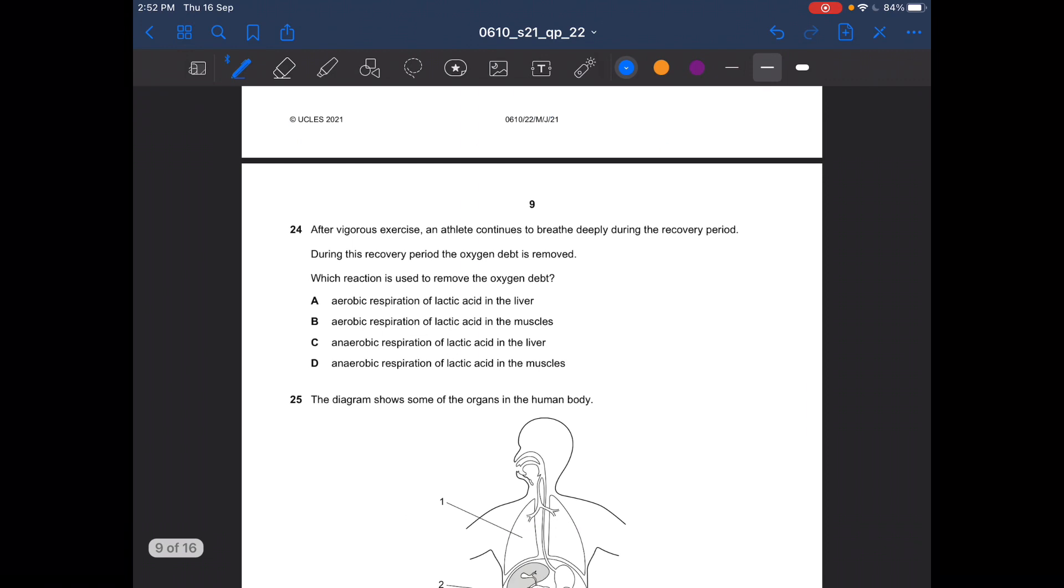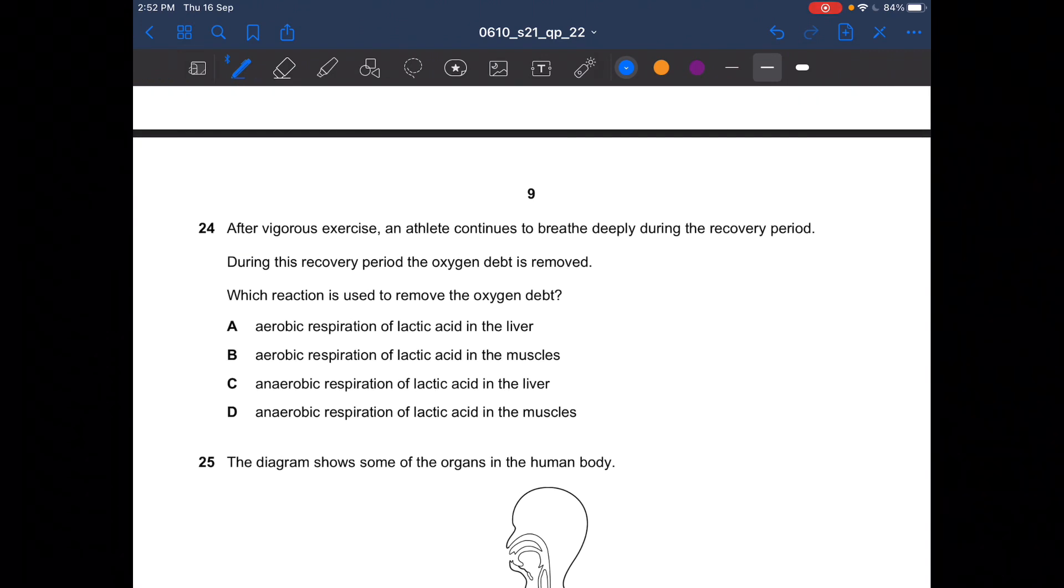Next question. After vigorous exercise, an athlete continues to breathe deeply during the recovery period. During this recovery period, the oxygen debt is removed. Which reaction is used to remove the oxygen debt? As there is enough oxygen, so aerobic respiration occurs. Aerobic respiration of lactic acid in the liver. So the answer is A.